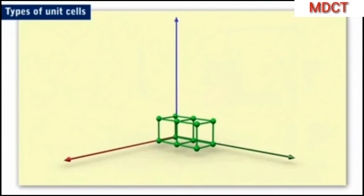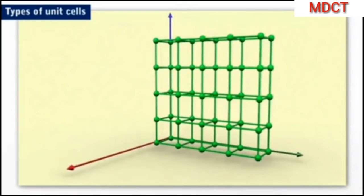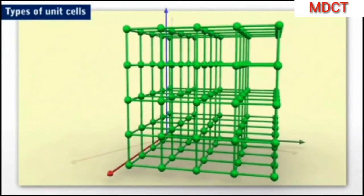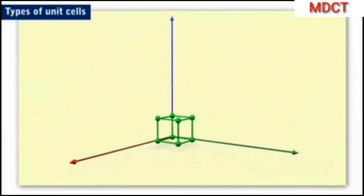You know that a three-dimensional crystal lattice is generated by the translation of lattice parameters A, B, and C.